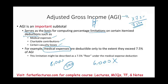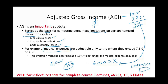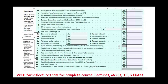So notice: if your AGI were $10,000, the floor would be $750, and you'd deduct the amount of medical expenses above that. That's why AGI is such an important figure. We have deductions above the line, and we have deductions below the line.